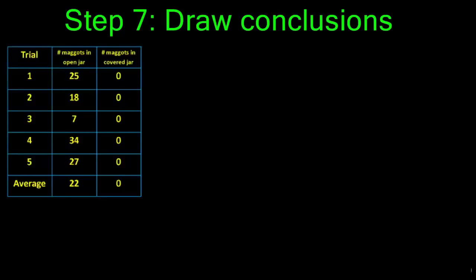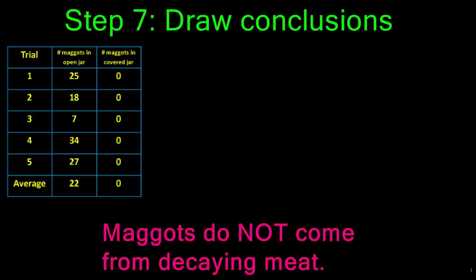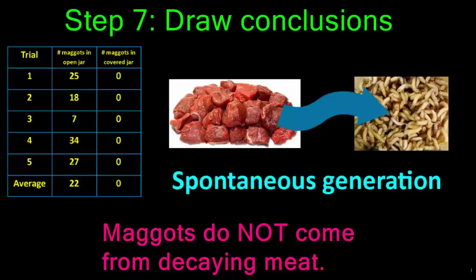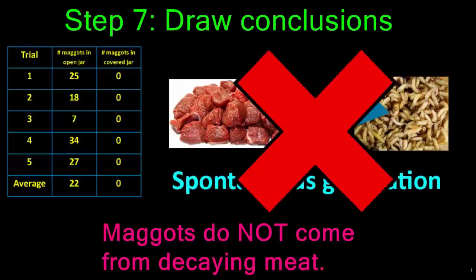In step seven of the scientific method, you draw your conclusions. This is when you decide whether your data supports or disproves your hypothesis. In the case of Redi's experiment, his data supported the idea that maggots do not come from decaying meat but rather from some other element in the environment — for example, the flies. Based on this information, we can conclude that maggots do not come from decaying meat; therefore, the idea of spontaneous generation was false.